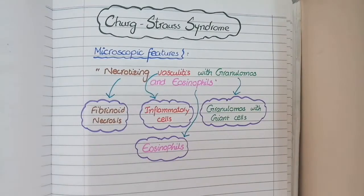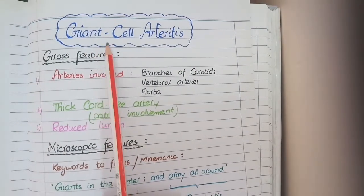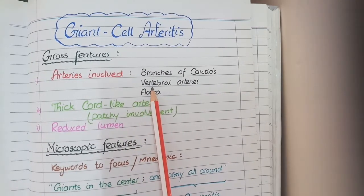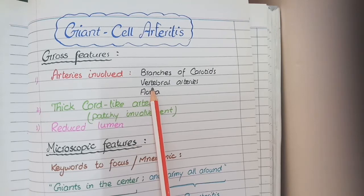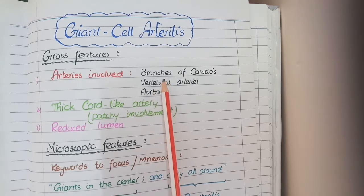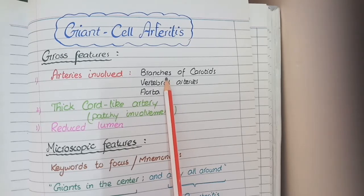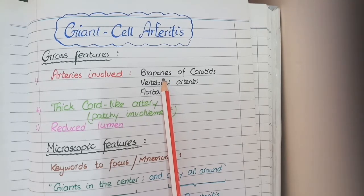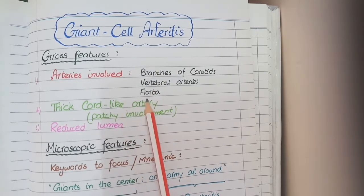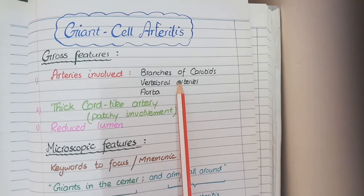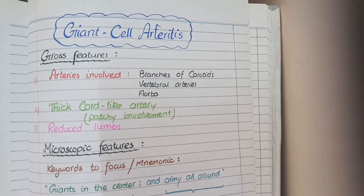Let's start with the pathological features of giant cell arteritis. The main arteries involved include the aorta and arteries of the head and neck, which include vertebral arteries and branches of the carotid arteries. Out of all these, the branches of the carotid arteries — such as the facial artery, temporal artery, and ophthalmic arteries — are the most commonly involved.